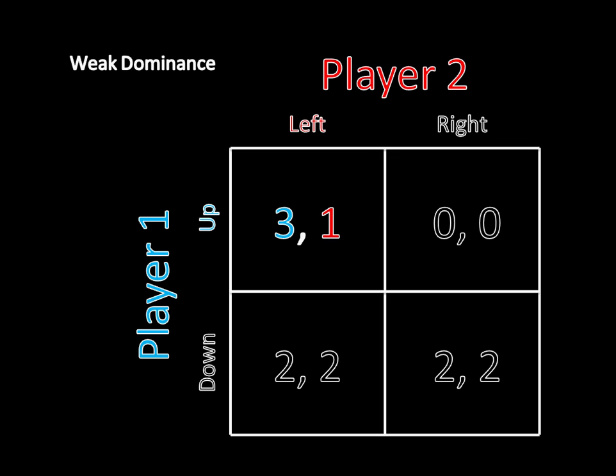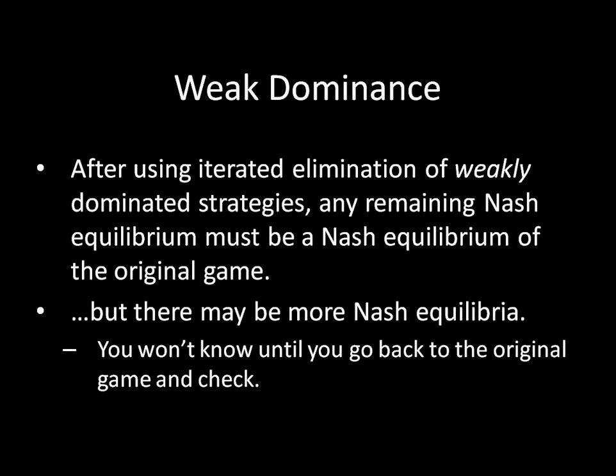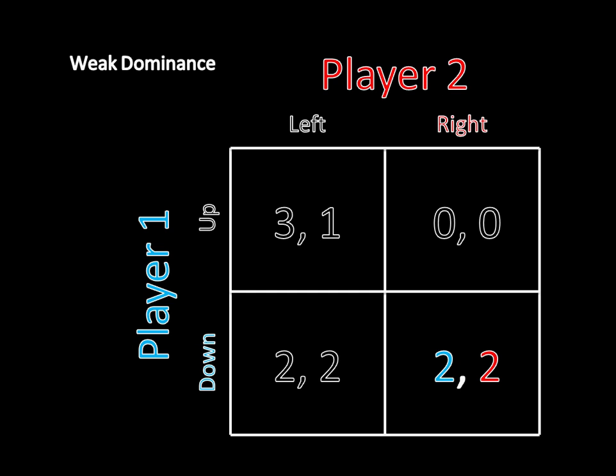But there's a huge caveat. After using iterated elimination of weakly dominated strategies, any remaining Nash equilibrium is a Nash equilibrium of the original game — but there may be more Nash equilibria. As soon as you eliminate a weakly dominated strategy, you might also be eliminating Nash equilibria from the game. The only way to know for sure is to go back and check. And in fact, by eliminating player two's right strategy, you are actually eliminating Nash equilibria.